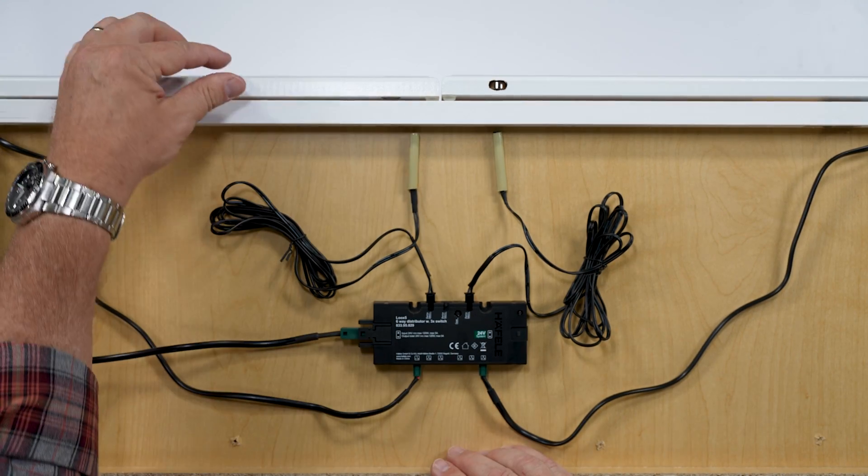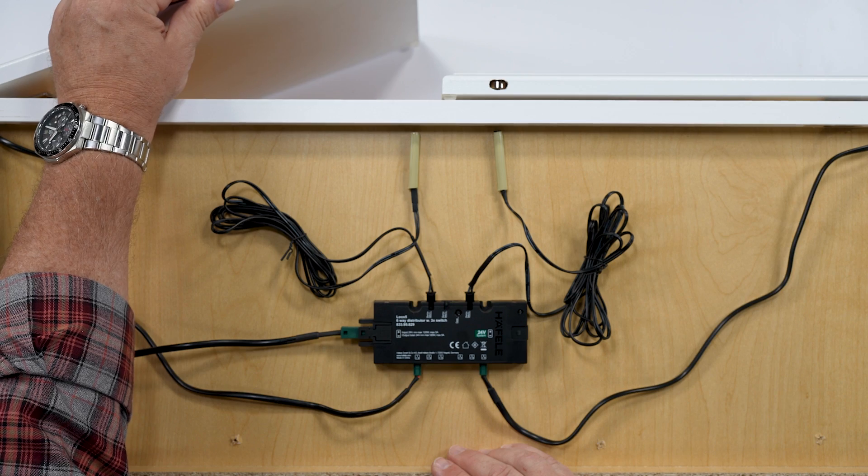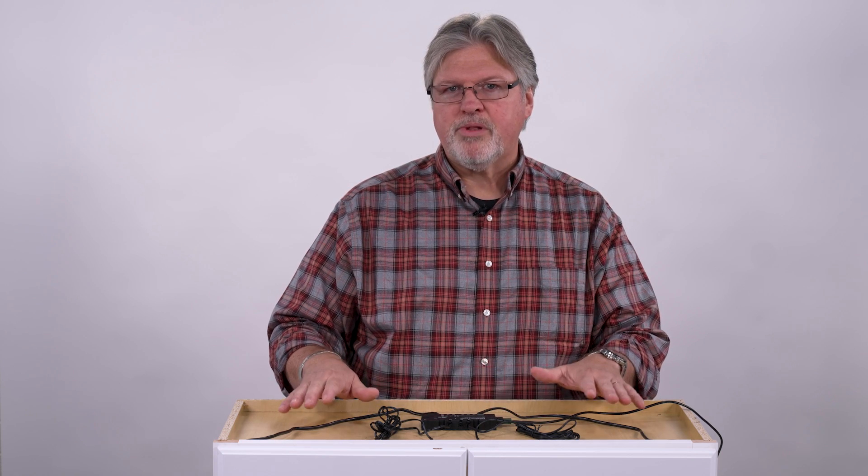And the real beauty of the reed switch is there's no contact. Therefore, there's nothing to wear out. This six-way distributor with the three switch ports is a great solution when you have multiple lights that you want to control with any number of magnets.